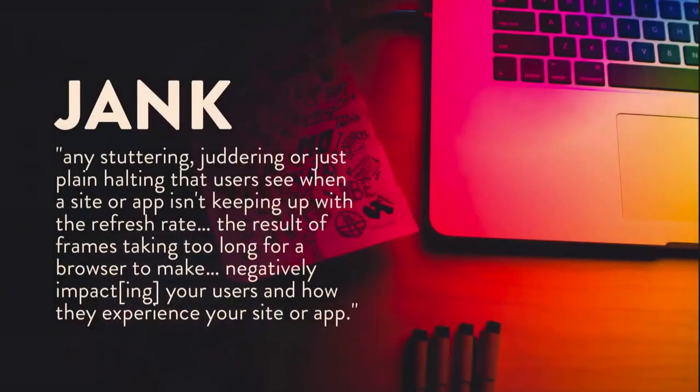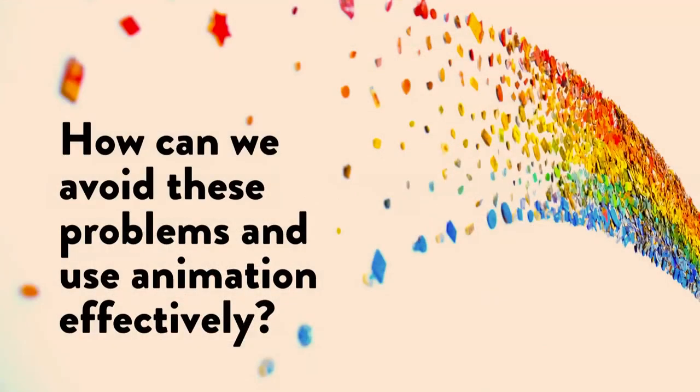There's also a term in the animation industry called jank — it's a great term. It basically means any kind of stuttering or halting or breaking in the flow of animation so you can tell something's wrong. Basically when an animation fails to load properly or fails to keep up with the rendering, it interrupts how people can interact with your app and it's very distracting. But animation is not the enemy — it's not all bad. It's a very useful tool. So how do we avoid all of these problems and use animation effectively in our projects?